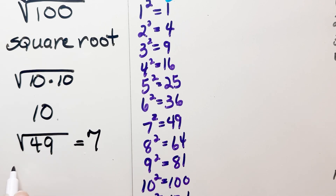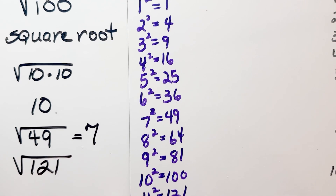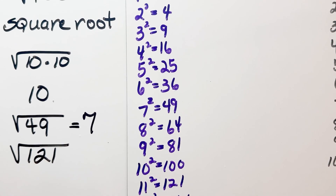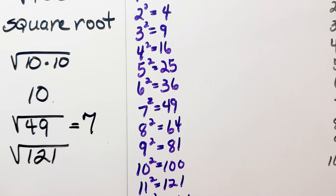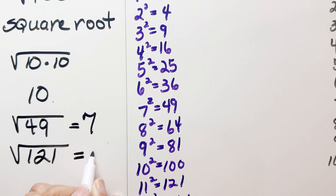Another one you might have: the square root of 121. What two twin factors will give me the product of 121? It's 11 times 11, so the square root of 121 is equal to 11.